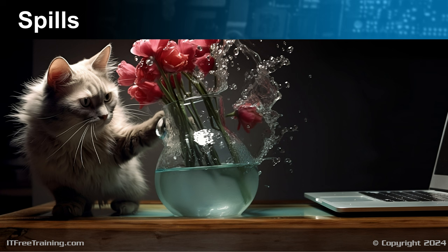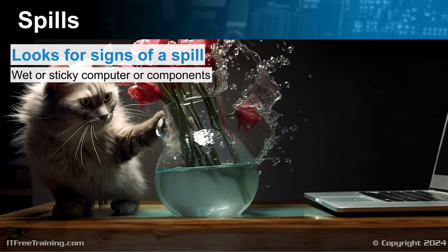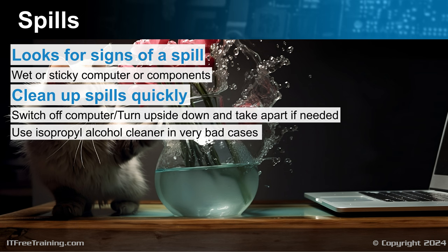In some cases, you may have a computer that has been subjected to a spill. Look for any signs of this — if the keyboard or computer is wet or sticky, this tends to indicate there has been a spill. Even if it was a while ago, spills involving drinks often leave a sticky residue after they dry. If you are there when the spill occurs, clean it up quickly and switch off the computer. If it helps, turn the computer upside down so the spill can drain away. If required, take the computer apart and find any components with liquid on them. Once you locate the spill, use a towel or something similar to clean up the liquid. In very bad cases, use isopropyl alcohol cleaner, which will evaporate leaving no residue. If you do save the computer, sometimes its lifespan will be reduced, so best to avoid spills if you can.